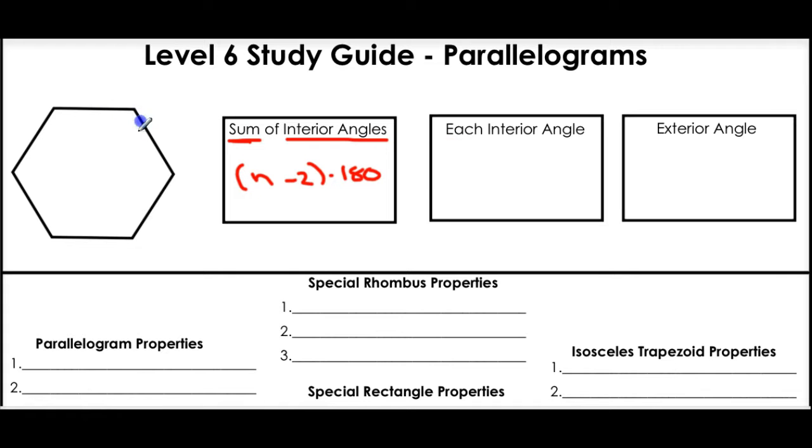And that just means if I added up all of these angles in a polygon, what would they add up to? The second one is each interior angle. And the way to do that is you just find the sum. So you use the same formula. And you divide that by how many angles there are.